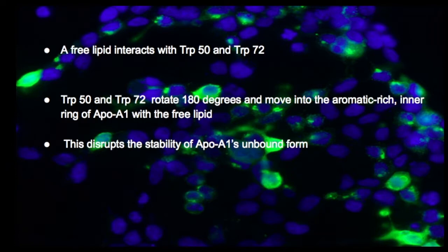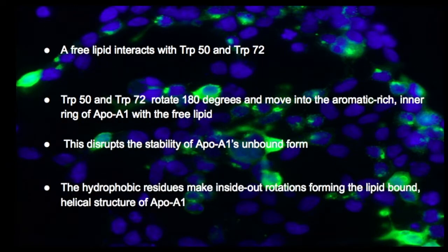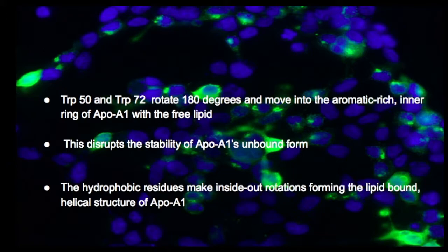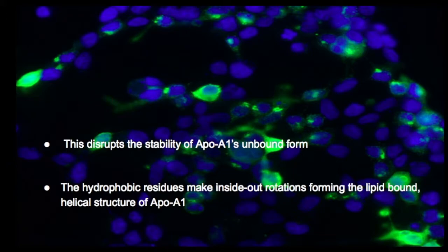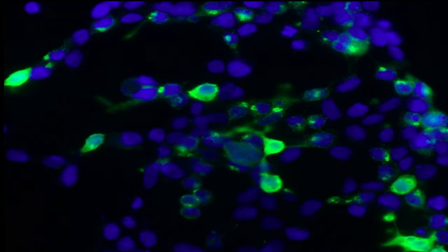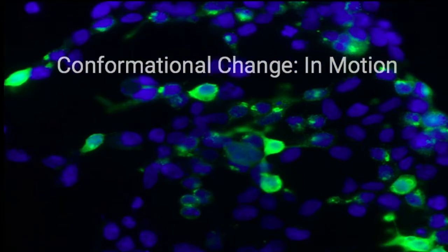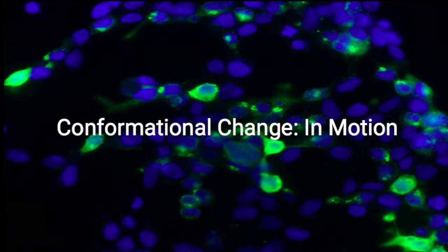Next, inside-out rotations of the terminal helices make a belt with all the hydrophobic faces of the helices facing inward. Lipid binding-induced rotations have an impact on the conformation of the lipid-free form. The structure goes from lipid-free to lipid-bound and extended to helical. Here's a visual representation of the sequence of events in the conformational change of the ApoA1 protein.